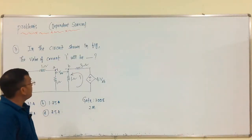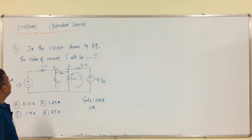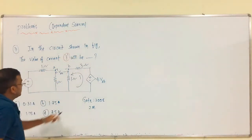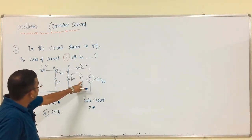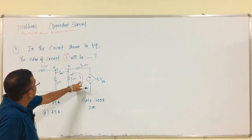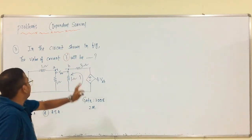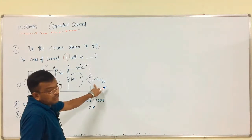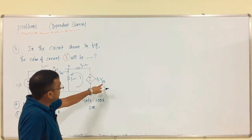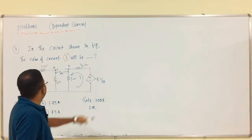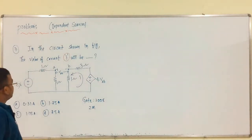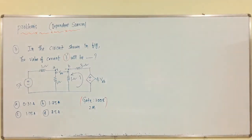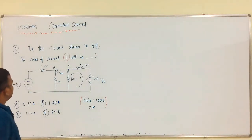Next question: in the circuit shown in figure, we have to calculate the value of current i. This is a voltage controlled voltage source — see we have plus minus, mu·i1 equals minus. This is GATE 2008, 2 marks. The examiner provides the current direction and we assume our current I1.